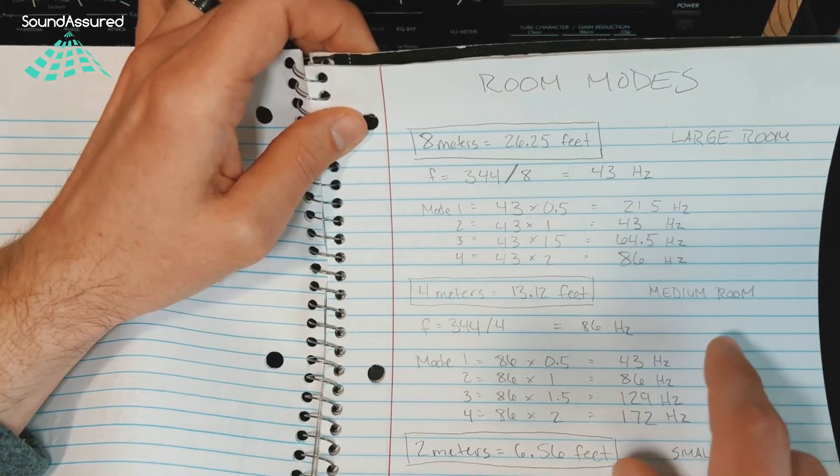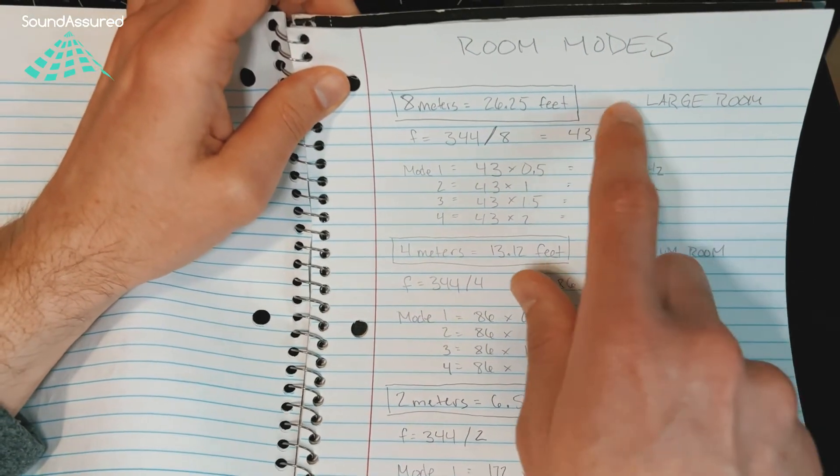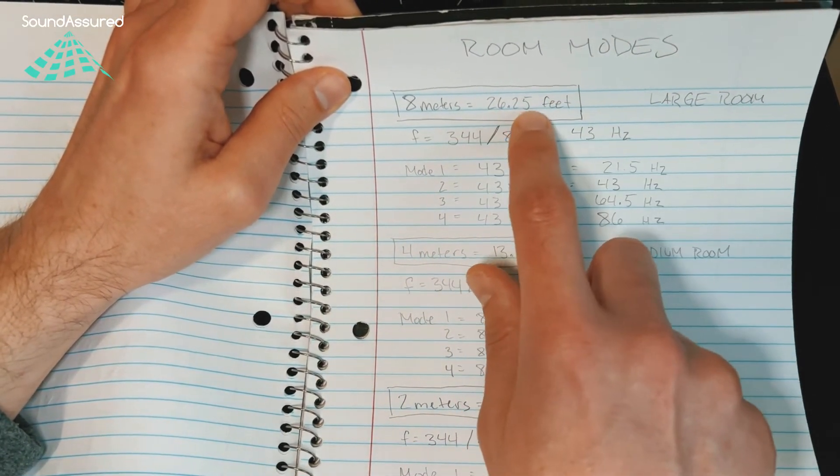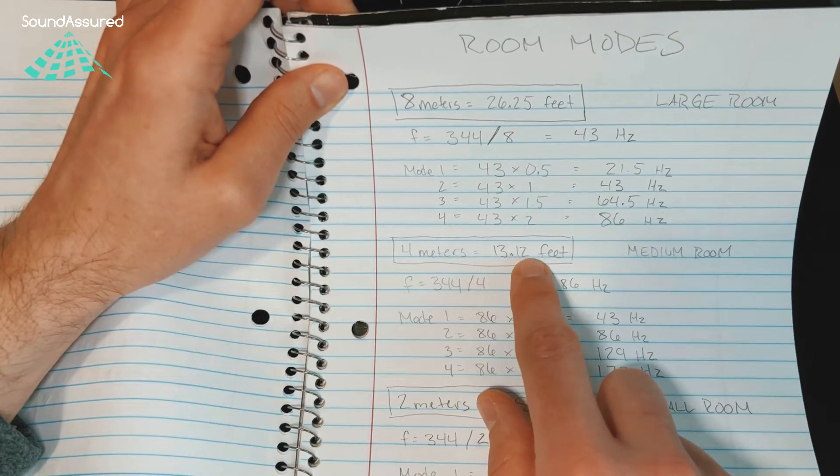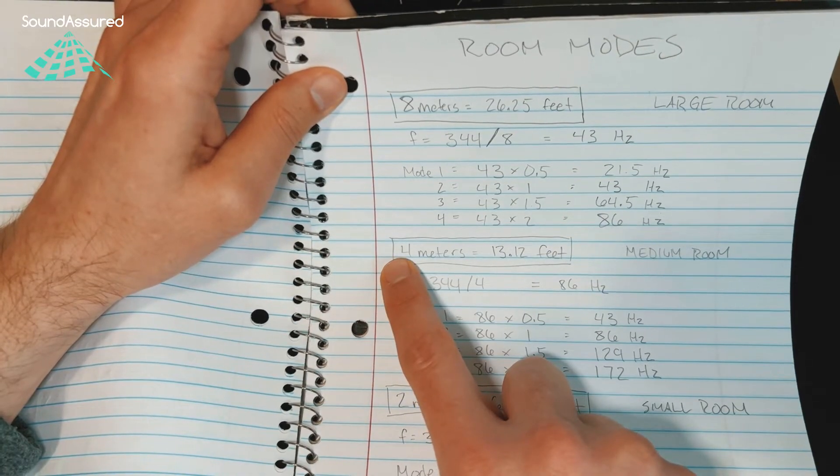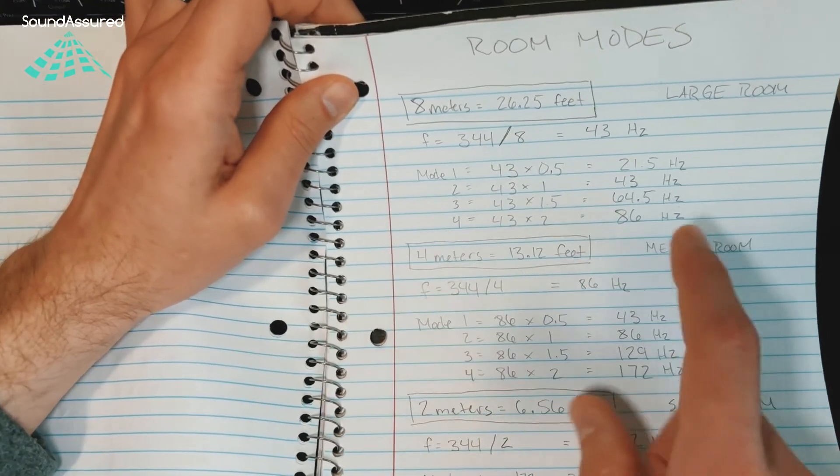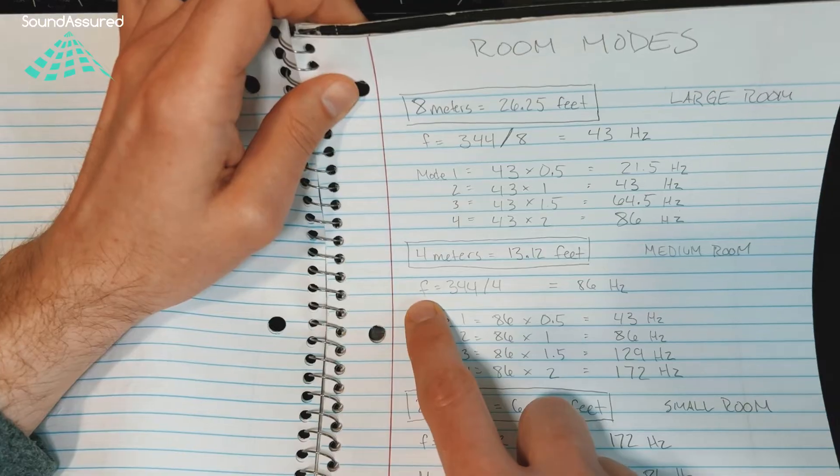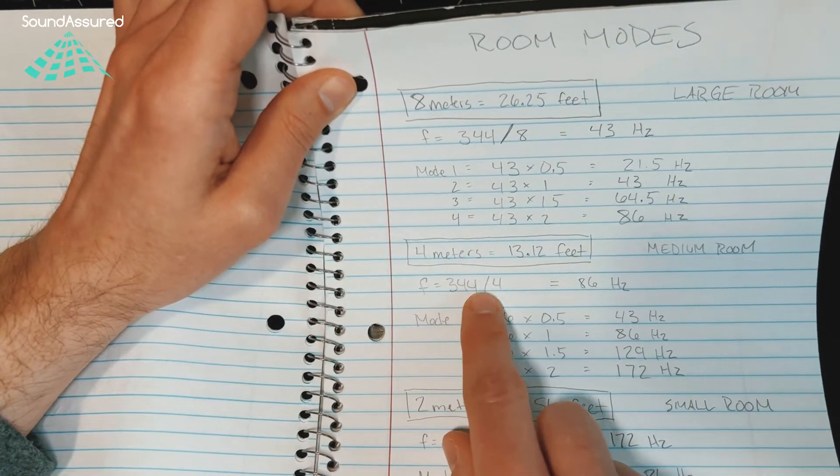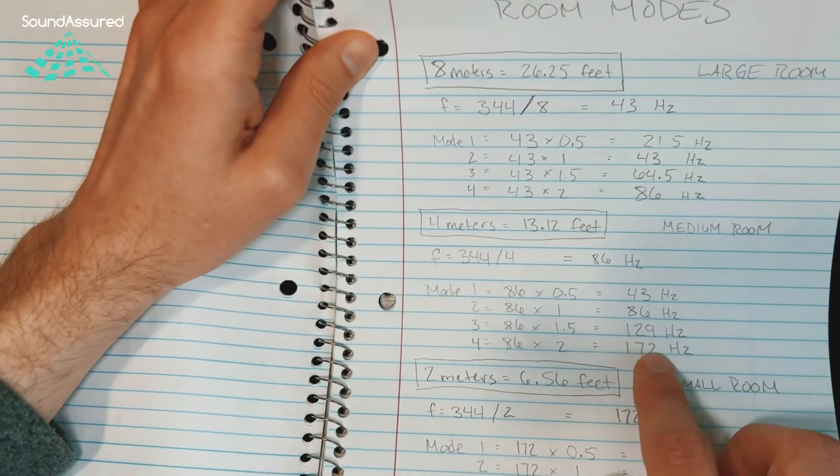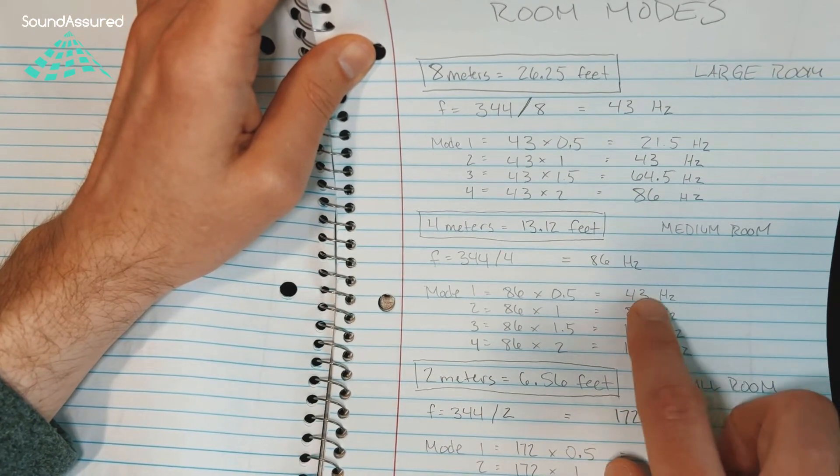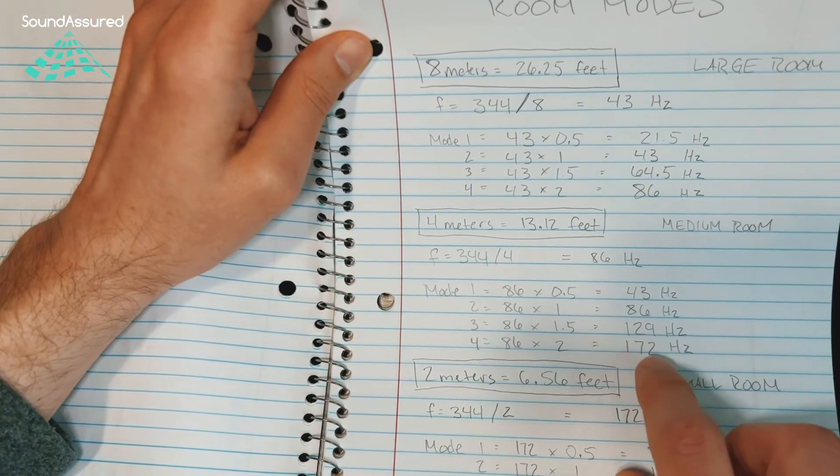So you can see, look at this larger room, 26.25 feet compared to a smaller room, 13.12 feet, which conveniently equals four meters exactly. So it makes our math easy in these examples. So 344 divided by four, the fundamental frequency is 86 Hertz. And you can see mode one, two, three, and four.